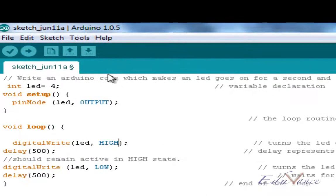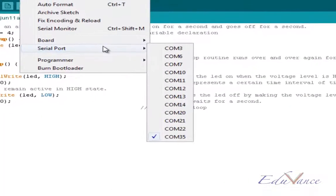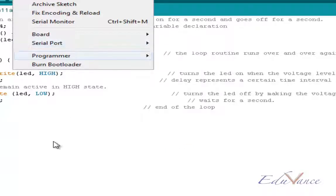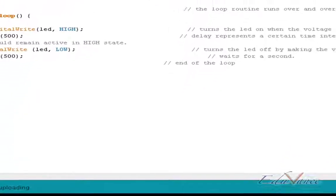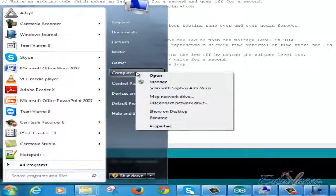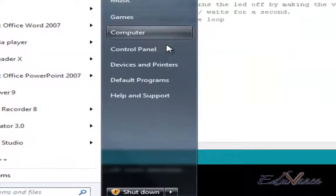And also, you have to select the correct serial port. So how do you know which serial port your Arduino is connected to? So what you would do is, you would go to my computer, right click on my computer and click on manage.